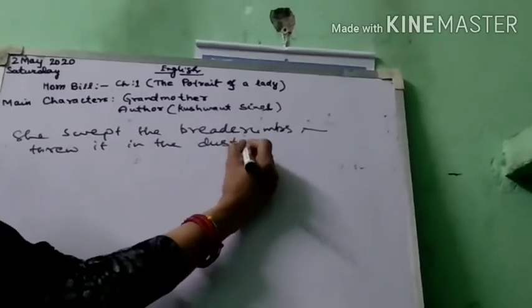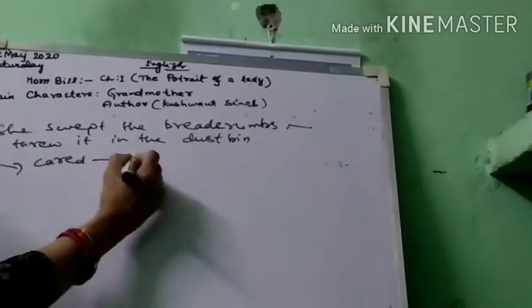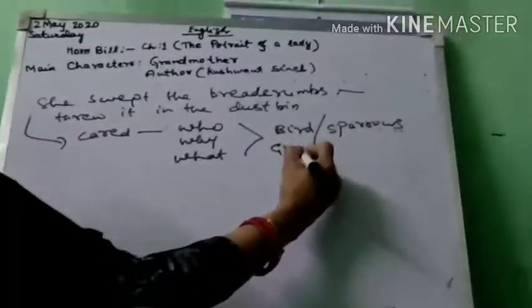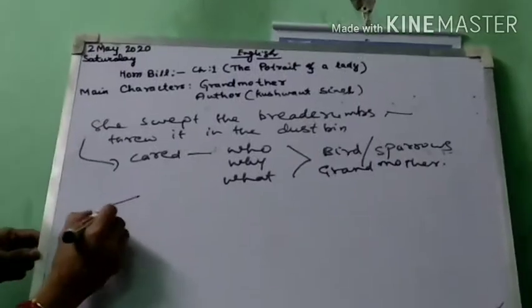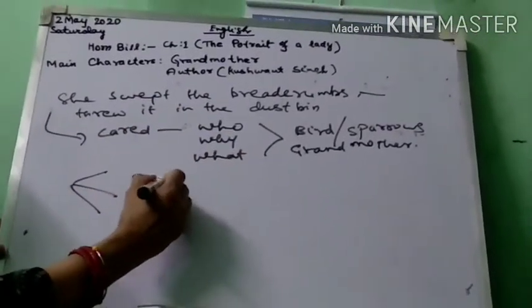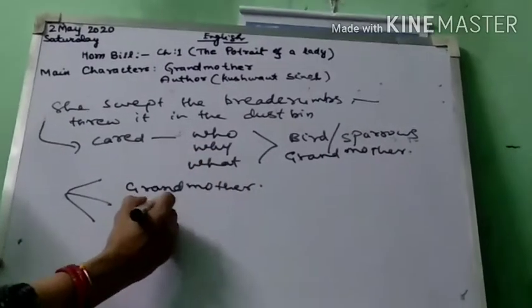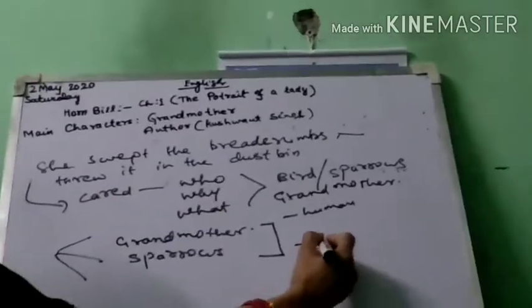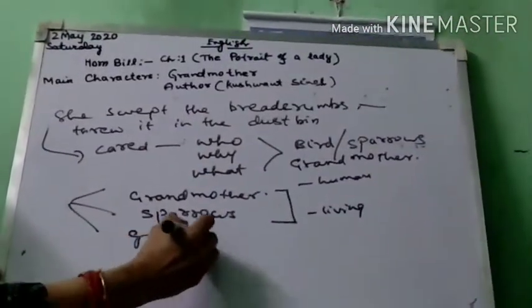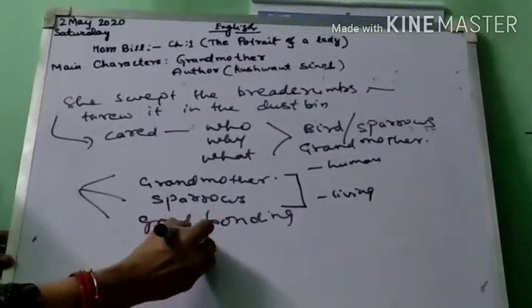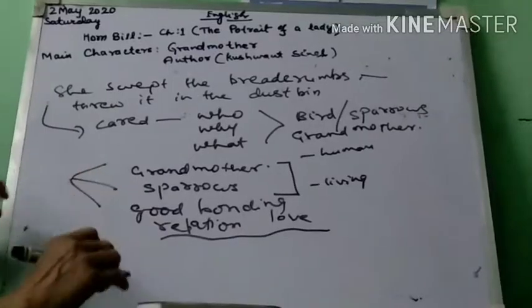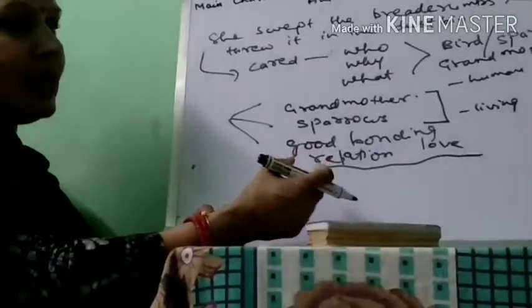This shows that the sweeper wasn't bothered about who had died and what was the relation between the sparrows and the grandmother. So human beings are less bothered, but animals come to know very soon that something has gone wrong. If the grandmother is not there, then the sparrows also were not there. In the whole summary, Kushwant Singh says that one human and one living being had a good bonding, a good relation and love for each other.